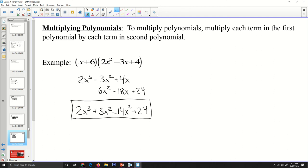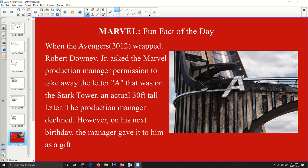Well, that's a quick one there, folks. Hopefully it's just a bunch of review from previous high school courses. Today's Marvel fun fact of the day, when Avengers 2012 wrapped, Robert Downey Jr., aka Spider-Man, asked Marvel Production Manager permission to take that big letter A that was on Stark Tower, an actual 30-foot tall letter. The Production Manager declined. However, on his next birthday, the manager gave it to him as a gift. So he has a big 30-foot A in his office from the Avengers. That's all I got for today, folks. Have a good day. Bye.